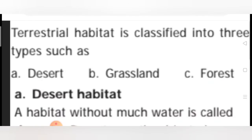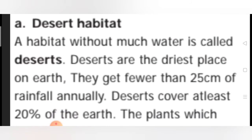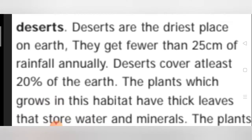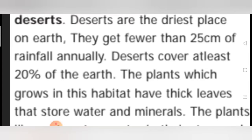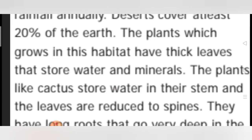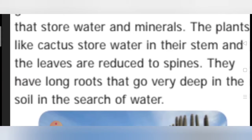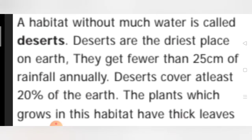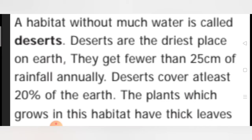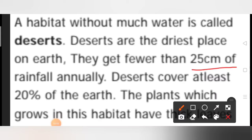First, let us discuss desert habitat. A habitat without much water is called a desert. Deserts are the driest places on Earth — they get fewer than 25 centimetres of rainfall annually. Deserts cover at least 20% of the Earth.